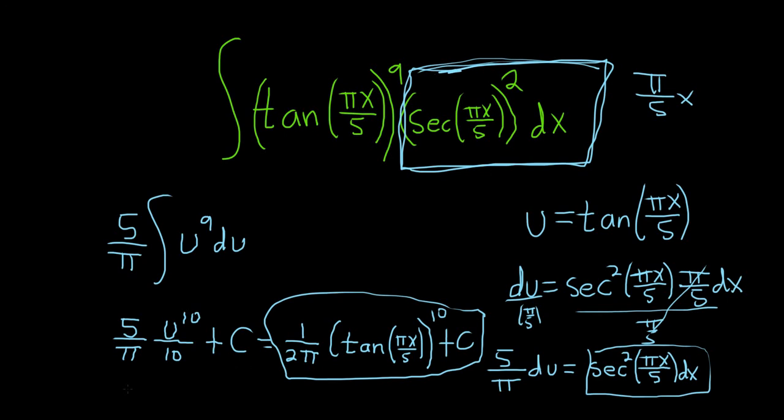Yeah, 5 over 10 is 1 half. So everything looks good, right? Because you would get 5 over 10 pi. So that's just 1 over 2 pi. Because 5 goes into 10 twice. And it goes into 5 once. And that would be the final answer.